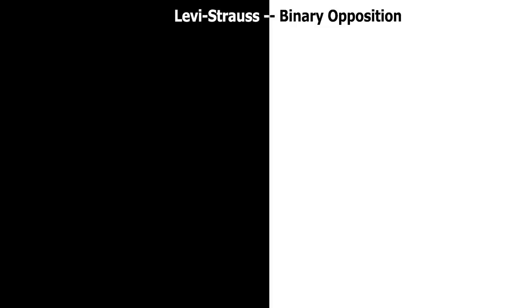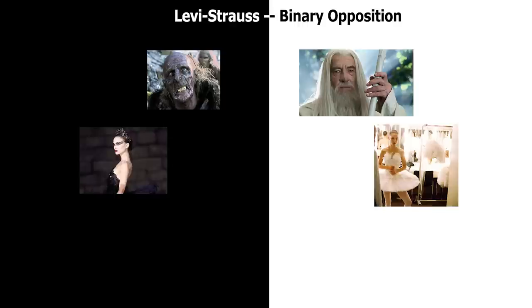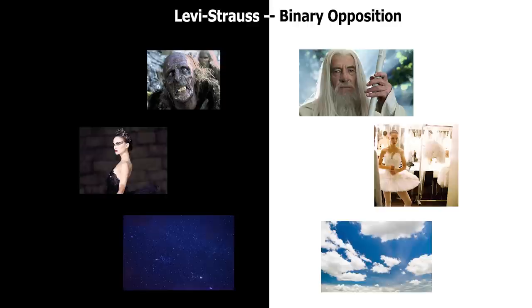We can develop this idea of storytelling with Claude Lévi-Strauss and his notion of binary opposition. He suggested that all narratives are driven by a constant creation of conflict, and that narrative can only end on a resolution of this conflict. Often this can be as simple as good versus evil, but it doesn't have to be this simplistic — it might be light and dark, or fear and confidence.